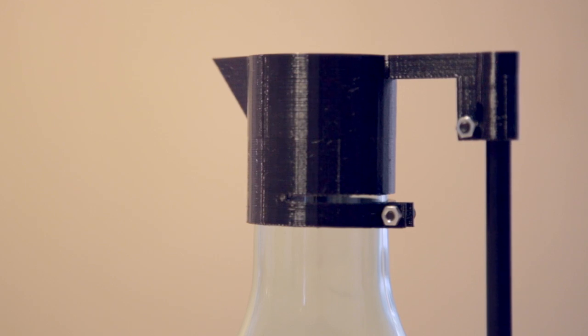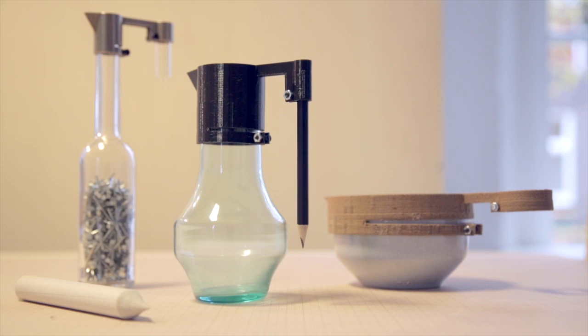So in the end you get a 3D printed part that's a connector and that connects two real-world objects—a handle and a jug—into a new object, a decanter.